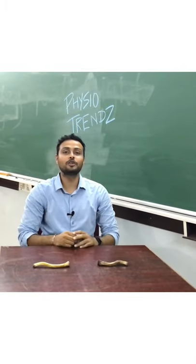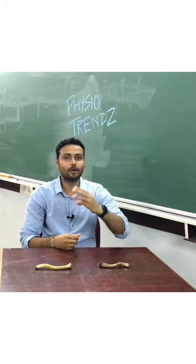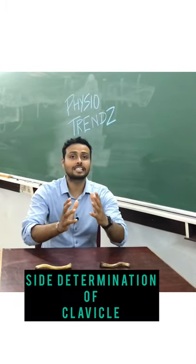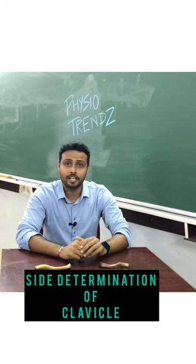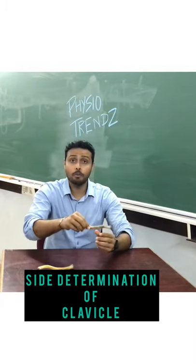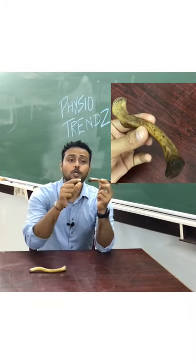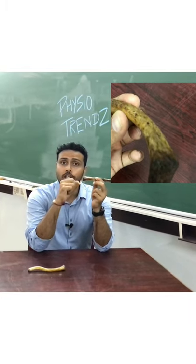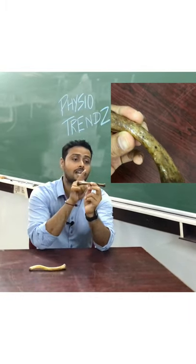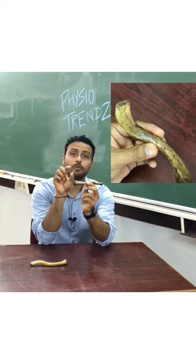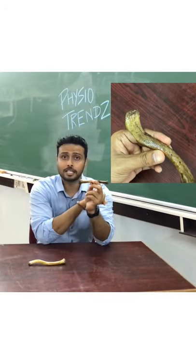In this video, I am going to teach you three points to determine the side of the clavicle. Point number one: the medial end is always quadrangular in shape and the lateral end is always flat in shape.